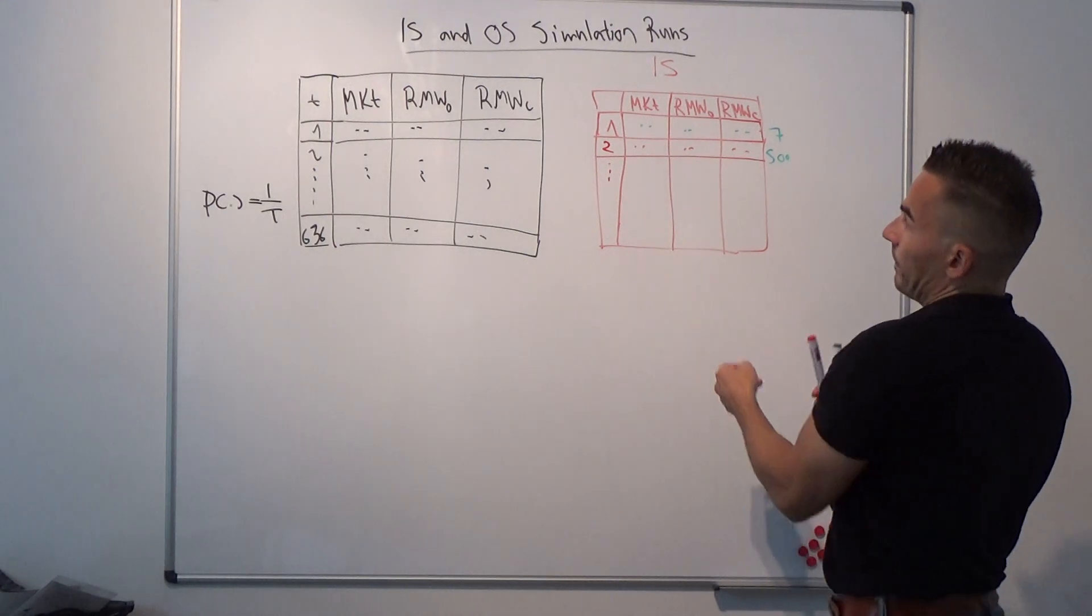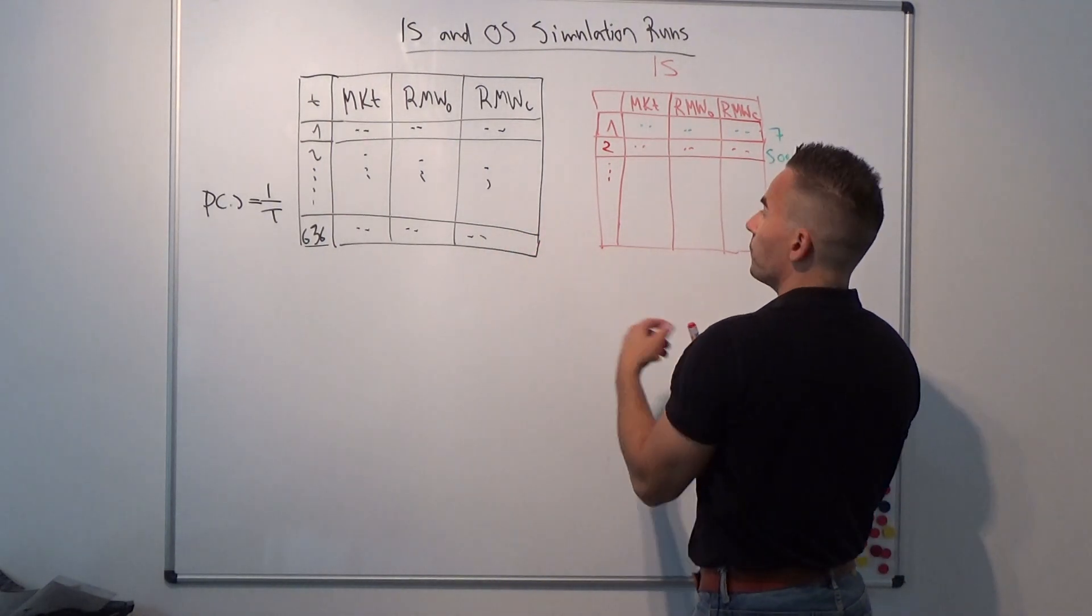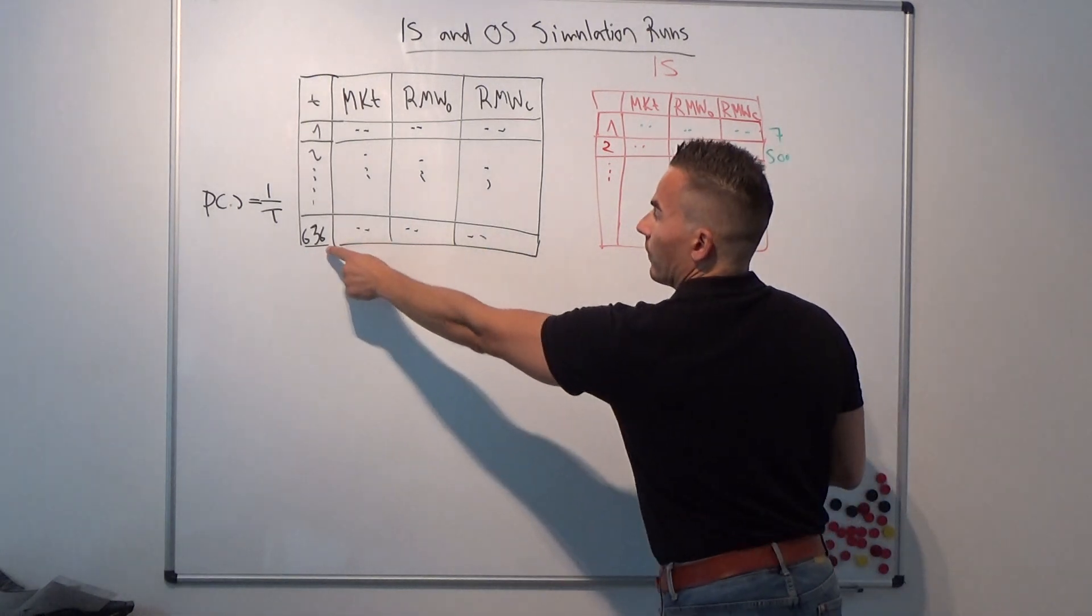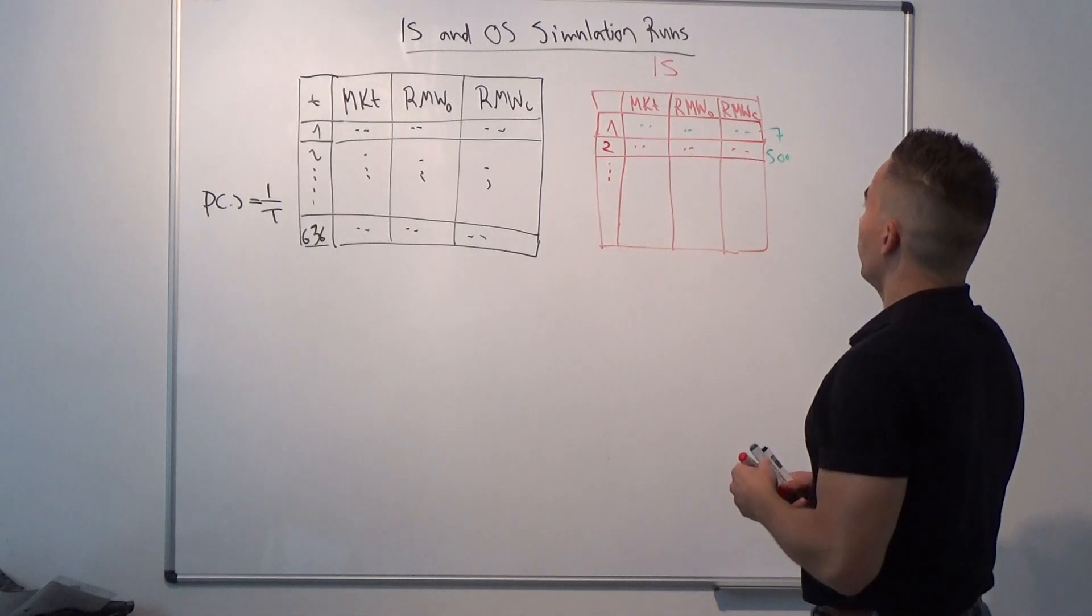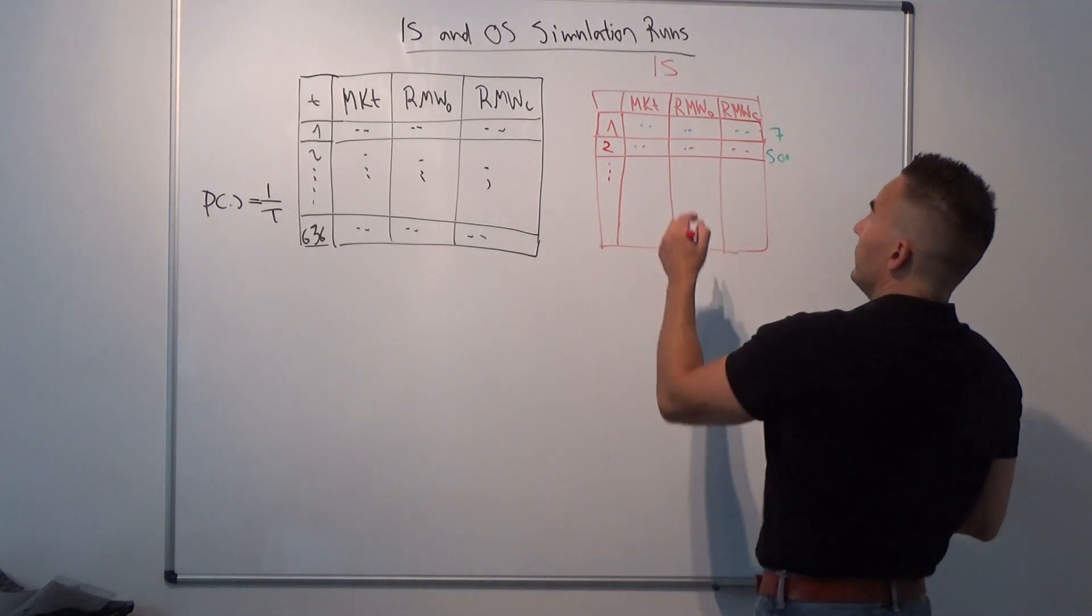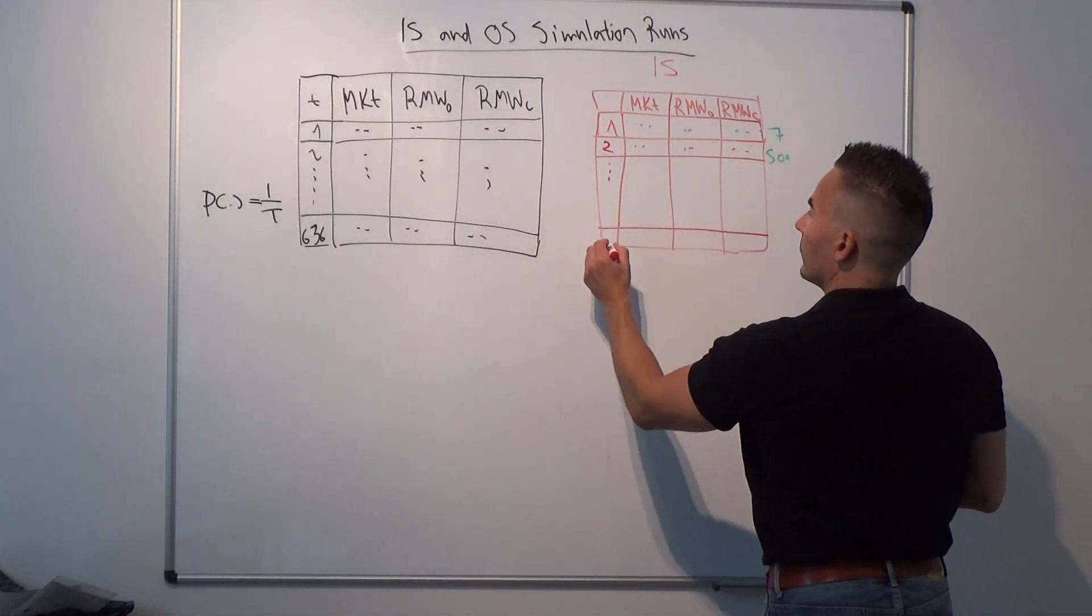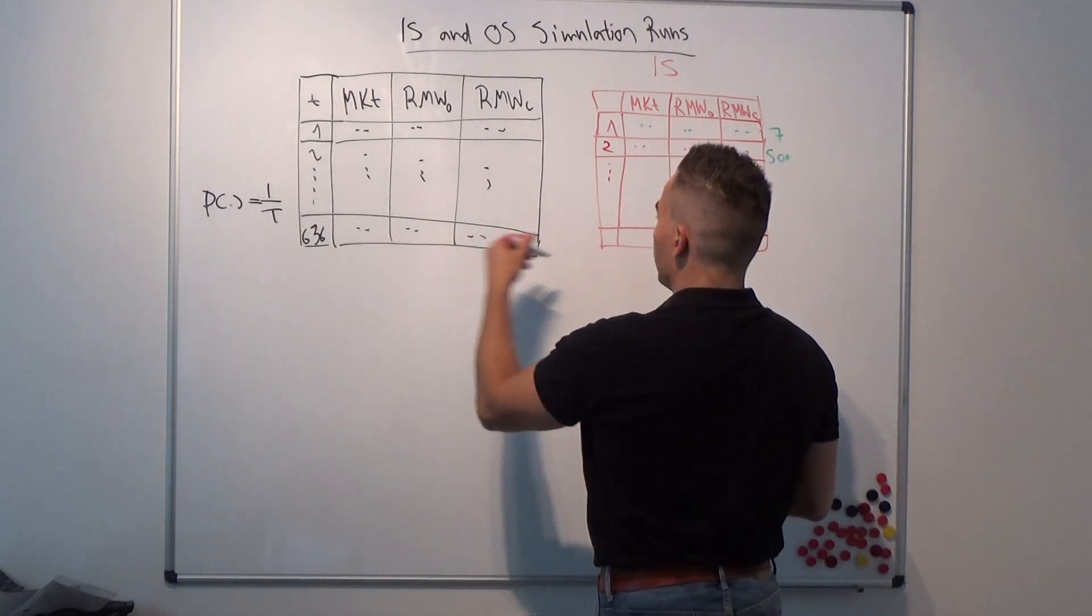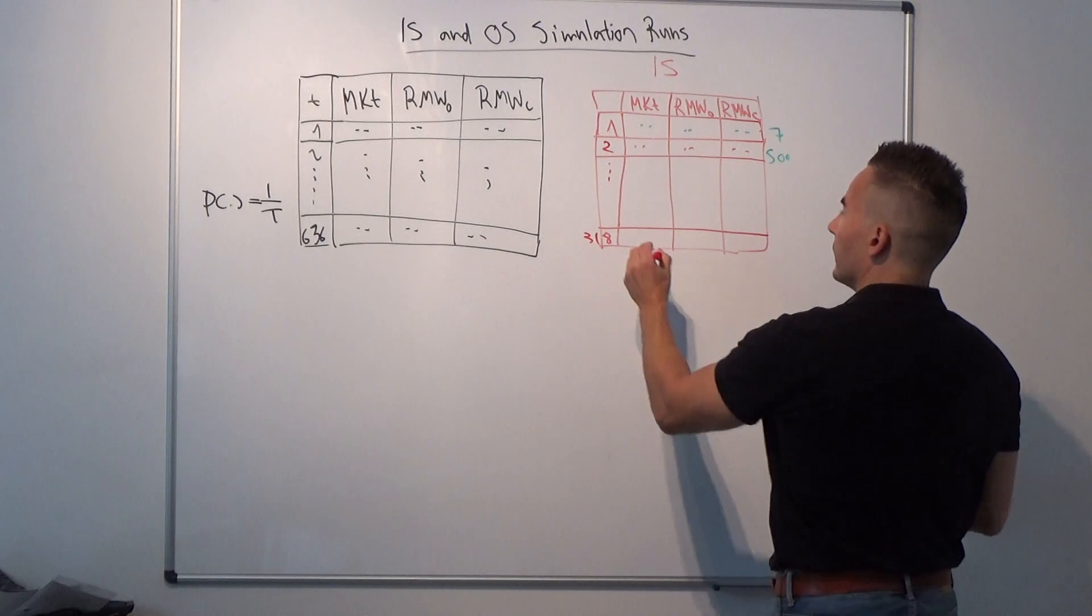This simulation will stop at row 635, and why we do that you will figure out very soon. This in-sample data matrix has only half the number of observations, so we have 318. It stops here.